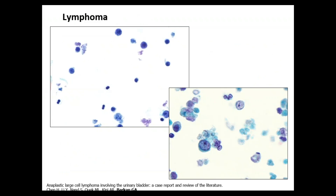The next differential diagnosis could be lymphoma. Lymphomas anywhere in the body are discohesive — they like social distancing and don't like hanging out together. Here you see single cells dispersed throughout the sample with higher nuclear cytoplasmic ratio and prominent nucleoli. Sometimes they have coarse chromatin; here you see a vesicular chromatin pattern. This was an anaplastic large cell lymphoma. The most common type of lymphoma seen in the bladder would be diffuse large B-cell lymphoma.